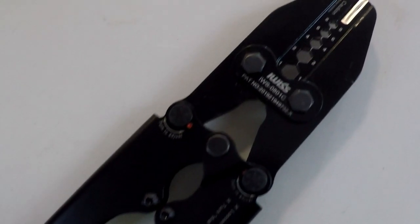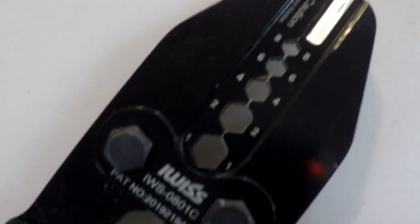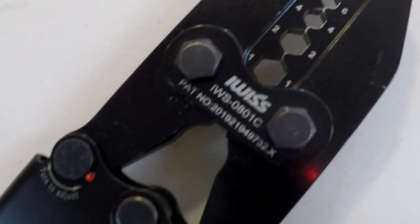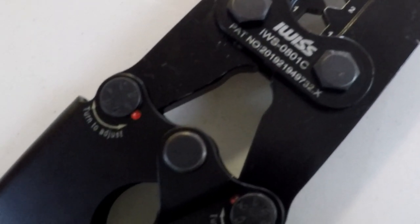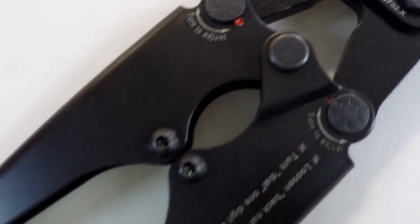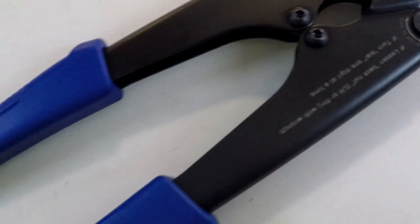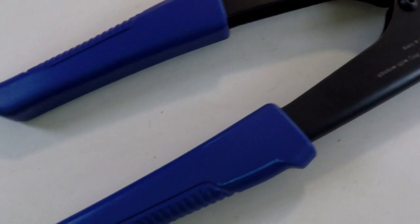They also do have the IWS1040 crimper, which is very much similar to this, except for it does not have the cutter edge on it. But it does the 1-aught, 2-aught, 3-aught, and 4-aught cables. So for the larger one. So if you've got two of these crimpers, you can go from 4-aught all the way down to 8-gauge wire.